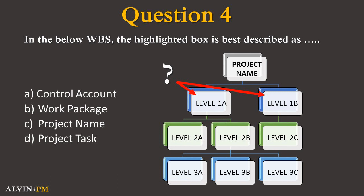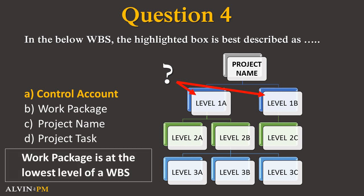Question 4. In the below work breakdown structure, the highlighted box is best described as — is it A. control account, B. work package, C. project name, or D. project task? The correct answer is A. The work package is at the lowest level of a WBS, while the control account is the higher bucket which consists of one or more work packages.